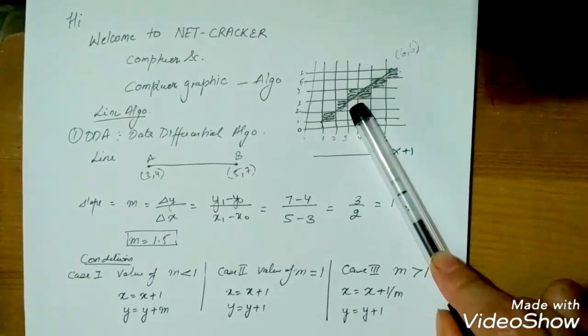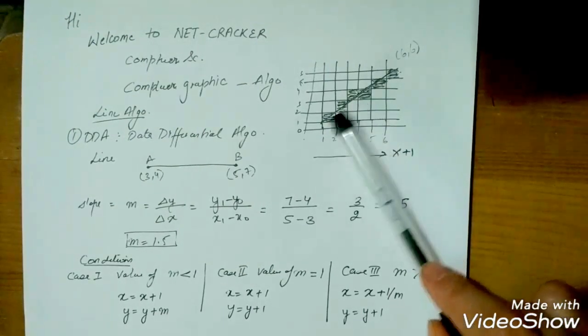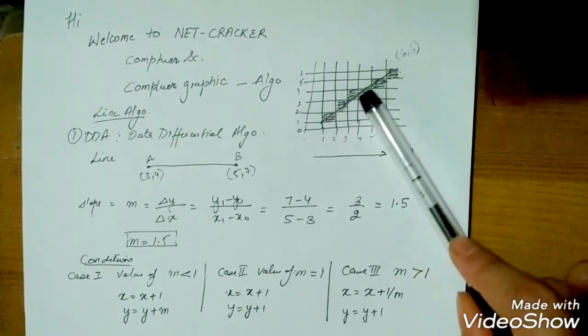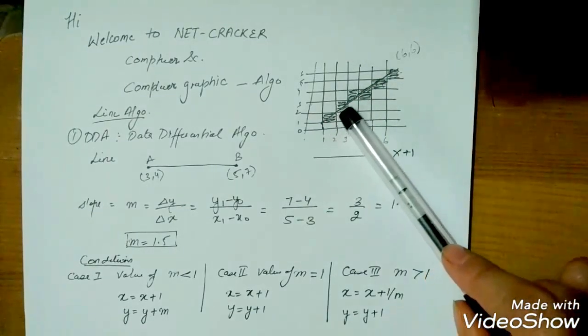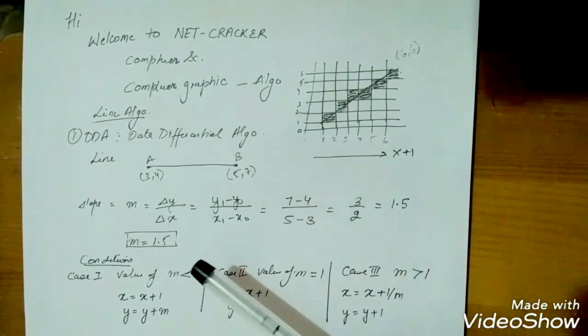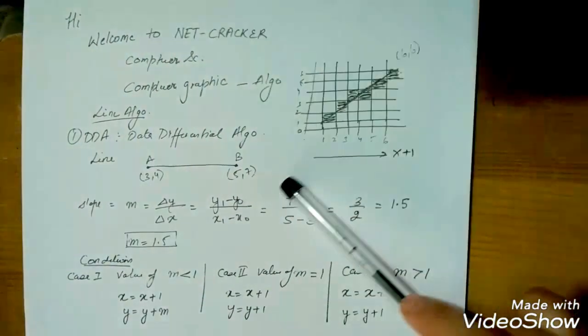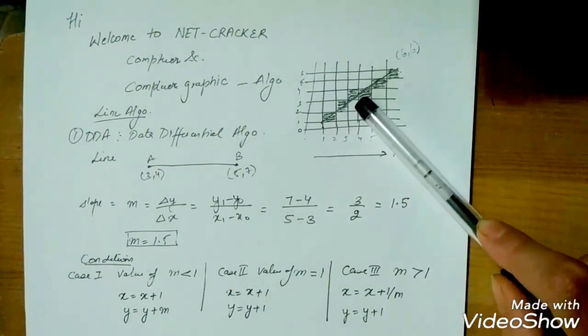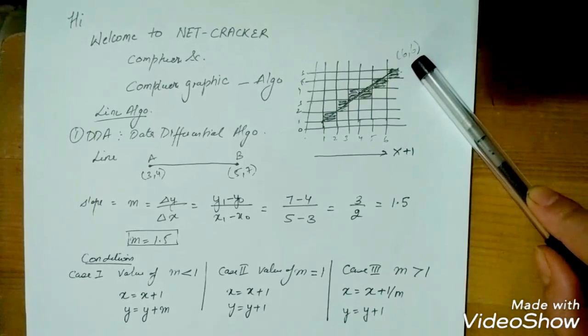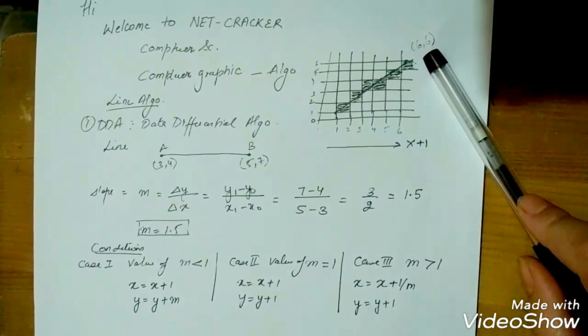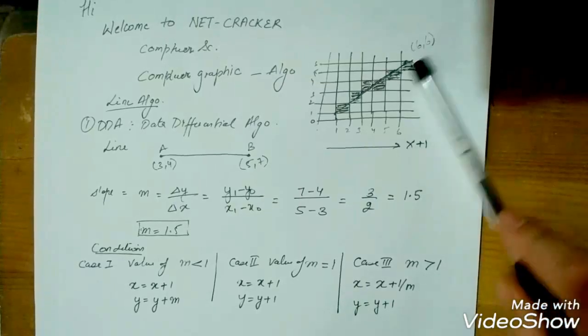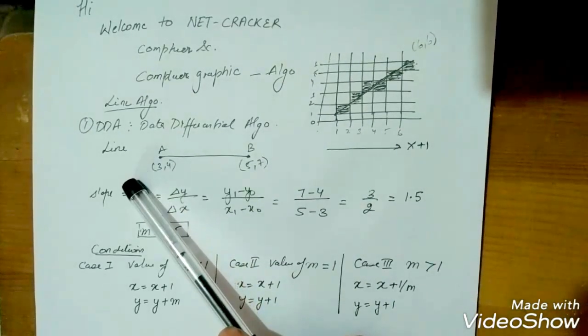So it forms a staircase. This is the basic drawback of Data Differential Algorithm - it forms a staircase, not a complete straight line on a computer screen because of the pixels. The basic thing about this algorithm is that we need to know the slope of a line.